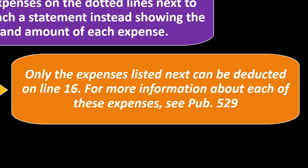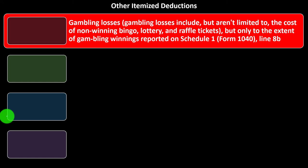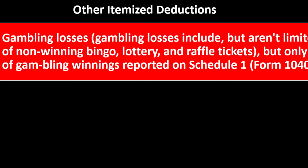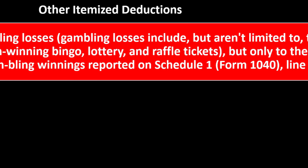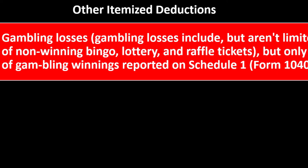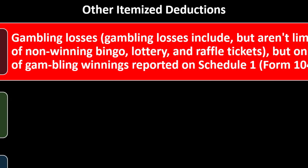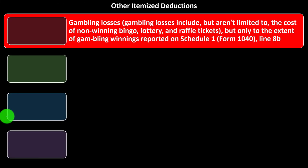Only the expenses listed can be deducted on Line 16. For more information about each of these expenses, see Publication 529, available on the IRS website, irs.gov. Gambling losses include, but aren't limited to, the cost of non-winning bingo, lottery, and raffle tickets, but only to the extent of gambling winnings reported on Schedule 1, Form 1040, Line 8B — the same item we saw on the income side.